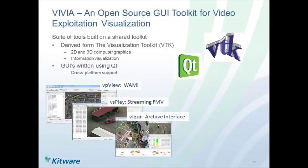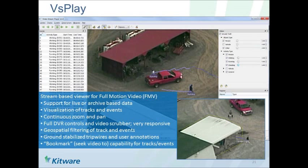Vivia is our collection of GUI applications — fully open source and available. It provides a VCR-like interface to incoming video where you can pause, play back, scroll forward, and scroll back. It's all built on Qt, an open source GUI toolkit, which means it's cross-platform — it runs on Windows, Mac, and Linux. It also handles the overlay problems of displaying analytics on top of video in a reasonably informative way. I'm going to show an example of VS Play, which is our FMV analytics app.